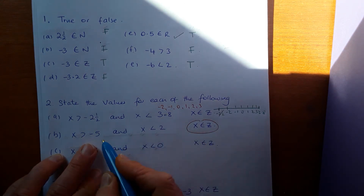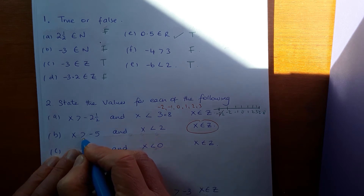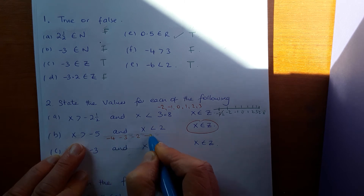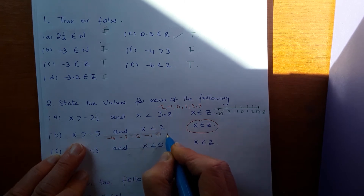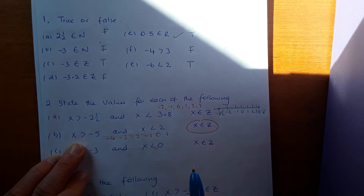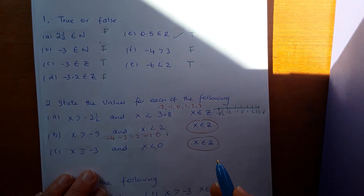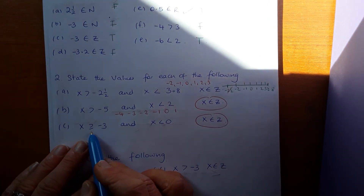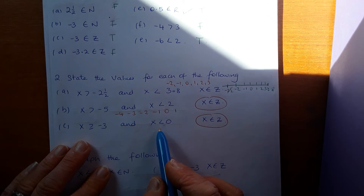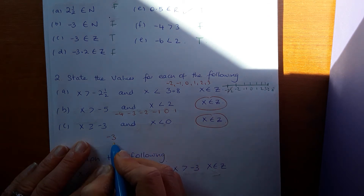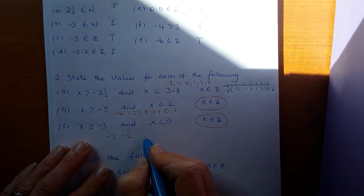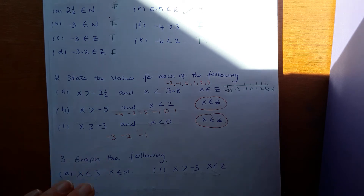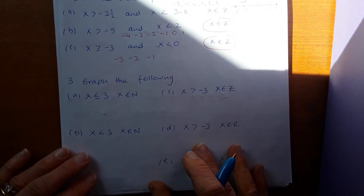If x is greater than minus five and less than two, and it must be an integer: it doesn't include minus five, so it starts at minus four, minus three, minus two, minus one, zero, one — it doesn't include two either. Next: x is an element of Z, bigger than or equal to minus three but smaller than zero. Values are minus three (included because of equals), minus two, minus one — zero is not included.